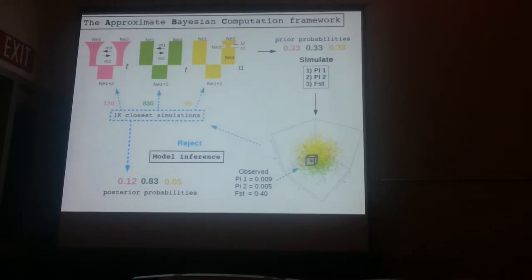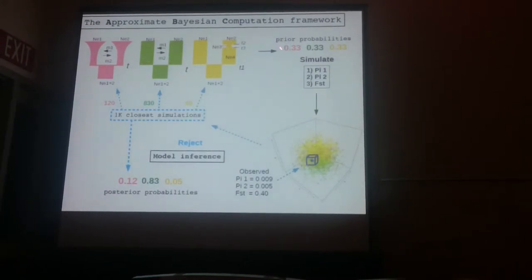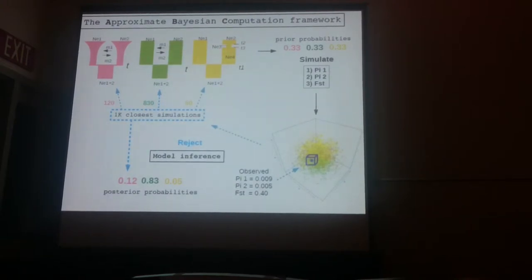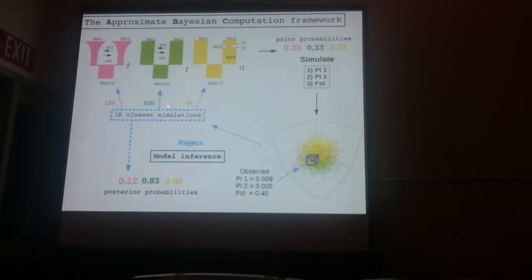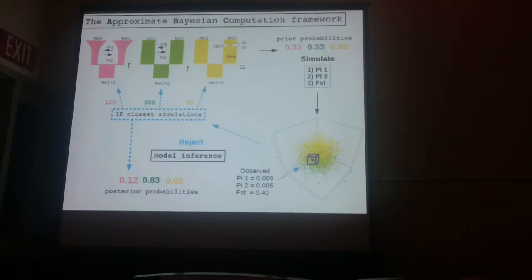You can use the same approach to do model inference. You simulate three models, let's say, in the same proportion, and this gives you a cloud of points. You go back and check the number of simulations that come from each of those models, which gives you a posterior probability for your model.